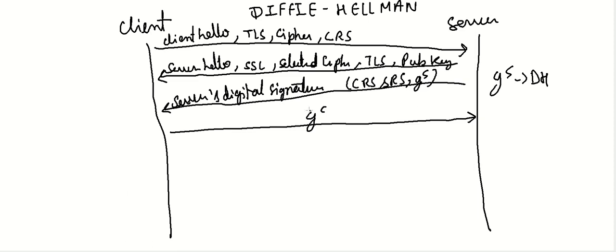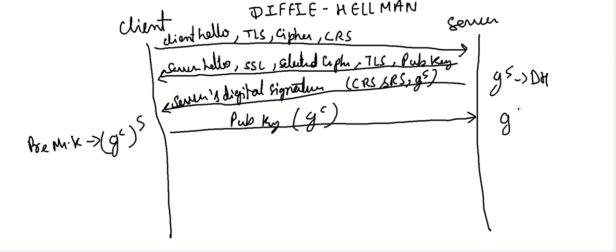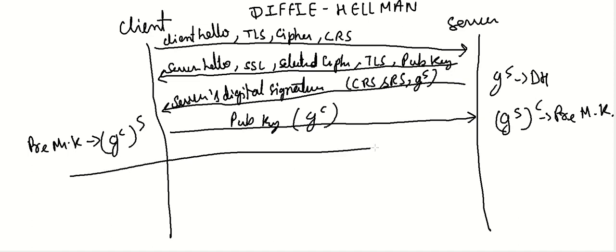This will be encrypted by the public key. Since the base is the same and both of them have the same base, the pre-master key generated will be the same at both sides. So the pre-master key will be generated using this kind of calculation, and at this point both client and server have a pre-master key.